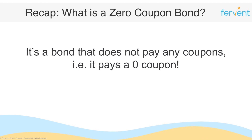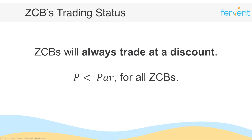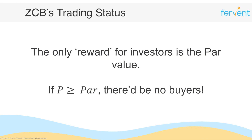Given that it doesn't pay any coupons, the only thing it does pay is the par at maturity. With that in mind, zero coupon bonds will always trade at a discount because the par is the only reward for investors. So the price P will always be less than the par value for all zero coupon bonds. If the price was greater than or even equal to the par value, there'd be no buyers — equal means you wouldn't be compensated for the time value of money, and greater would be even worse.